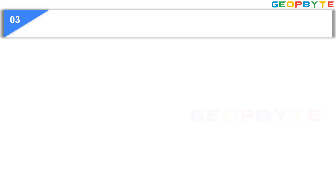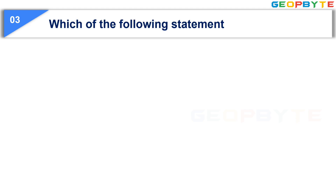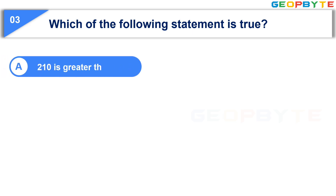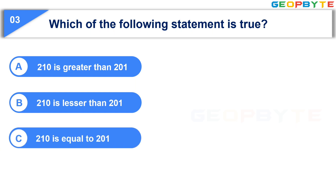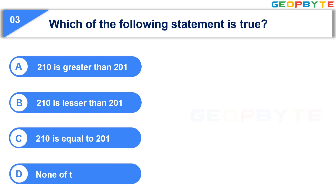Now let us see the third question: Which of the following statement is true? Option A: 210 is greater than 201. Option B: 210 is lesser than 201. Option C: 210 is equal to 201. Option D: None of these.